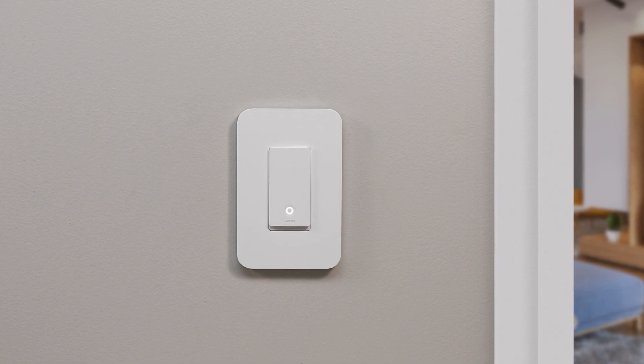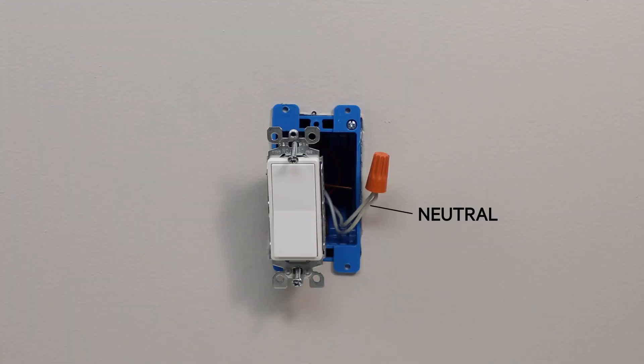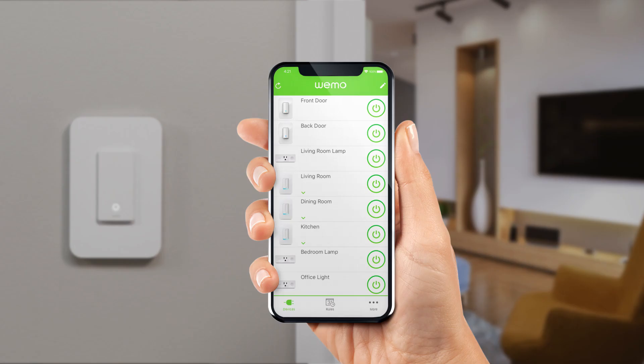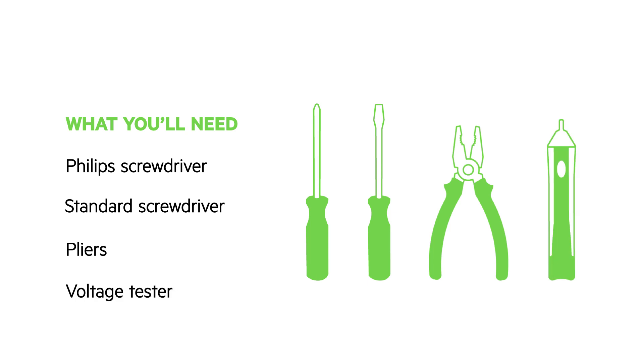First, the basics. Neutral wires and a strong Wi-Fi signal are required to install your light switch. Keep your mobile device with the Wemo app close by during the installation. You'll need a Phillips and standard screwdriver, pliers, a voltage tester, and everything in the Wemo Light Switch box.